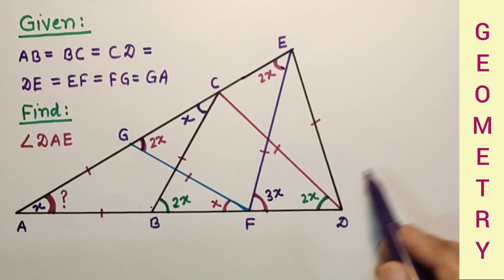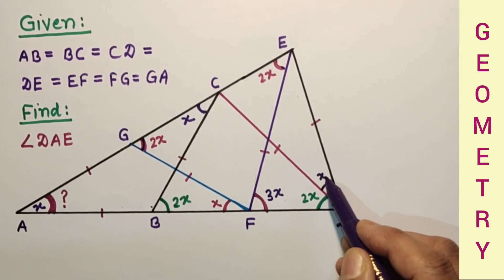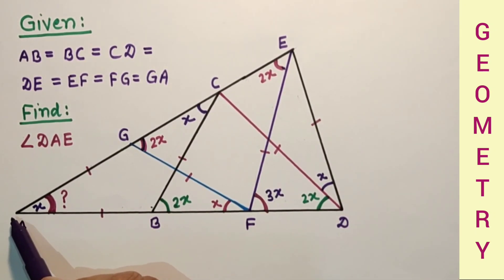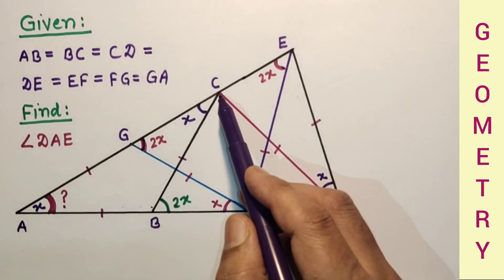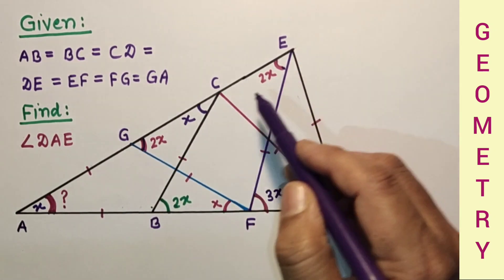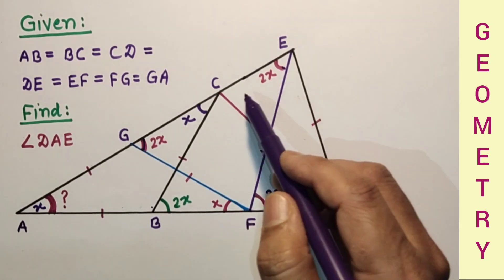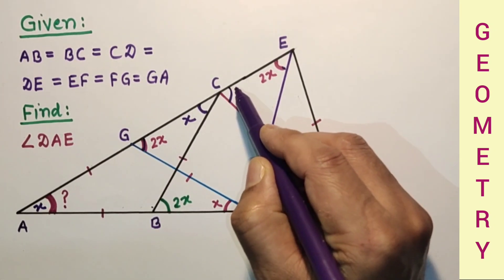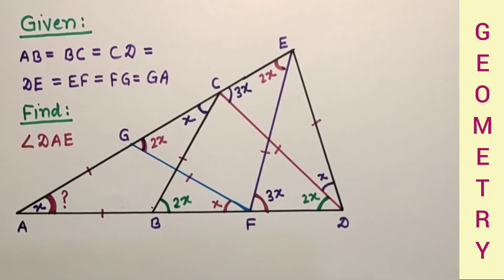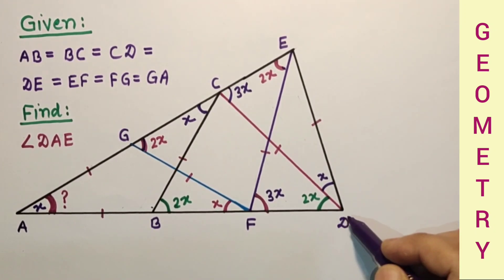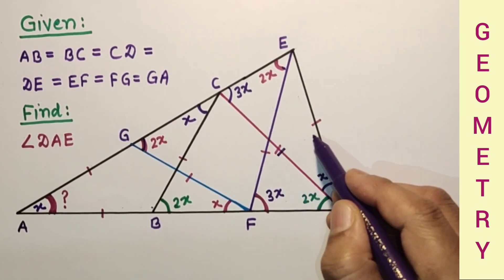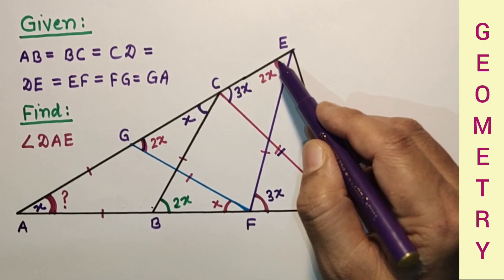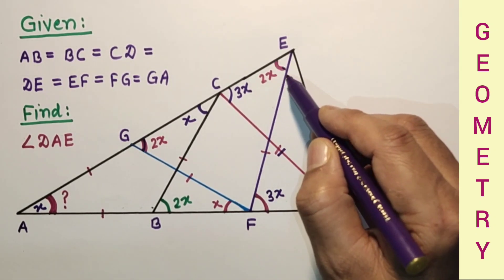This is 3X and this is 3X. For triangle ACD, angle DCE is an exterior angle and will be equal to the sum of the two remote interior angles — 2X plus X, so this is 3X. Now DE is equal to DC, so this angle equals this angle. This angle is 3X, this will be 3X. Already 2X is there, so this remaining part is X.